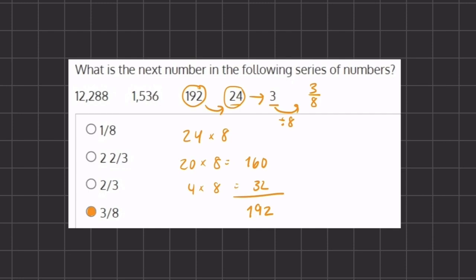If you want to make sure that this pattern is consistent for both of these two numbers, you can multiply 8 by 192 to get 1536. And again, multiply by 8 to get this first number in our series.